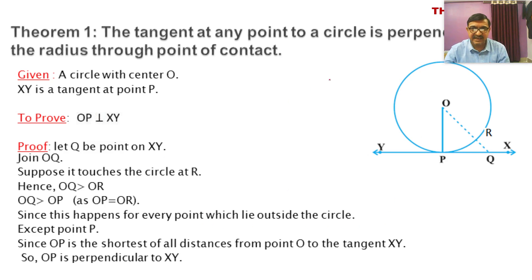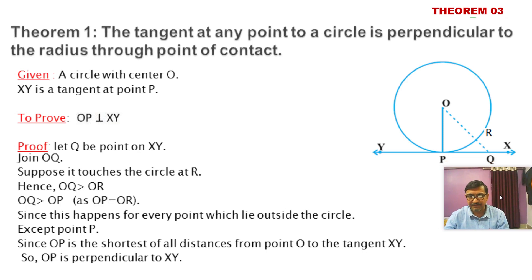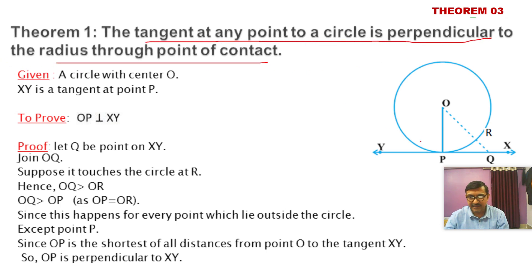Next is theorem number three, very important in the chapter of circles. The statement is: the tangent at any point to a circle is perpendicular to the radius through the point of contact. The point of contact is P, joining from the center is OP, and the tangent is XY. We have to prove that OP is perpendicular to XY.